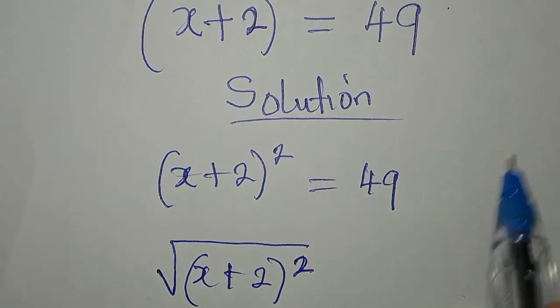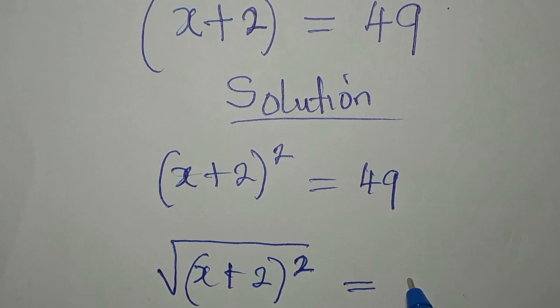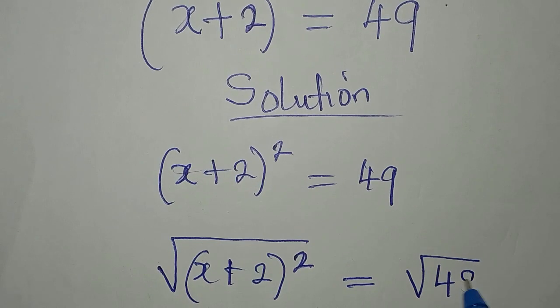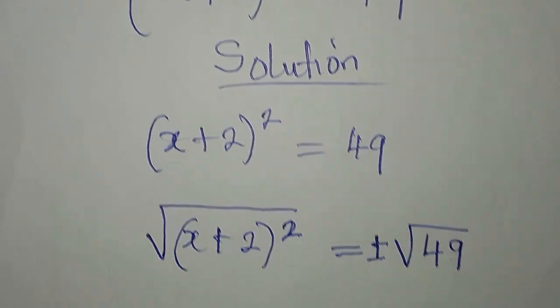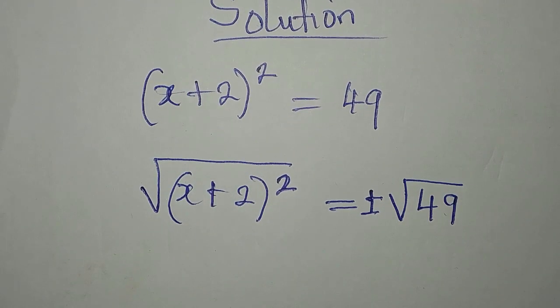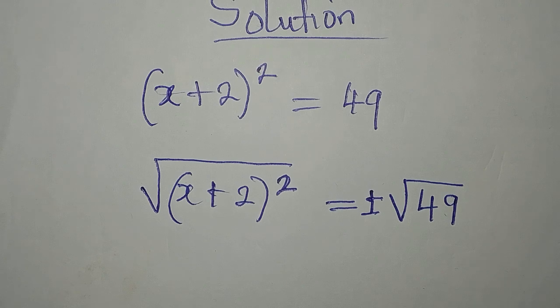But in this case we are taking the square root of both sides, and every time we take the square root of both sides, on the right hand side we have two values, positive or negative.